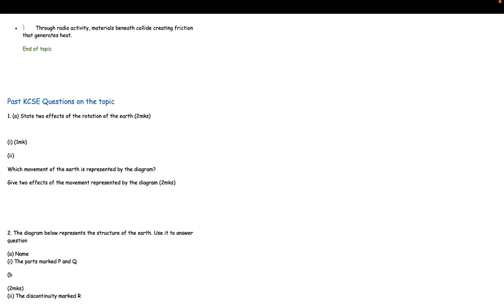Past KCSE questions on the topic: 1. (a) State two effects of the rotation of the earth (2mks). (b) Which movement of the earth is represented by the diagram (1mk). (c) Give two effects of the movement represented by the diagram (2mks).